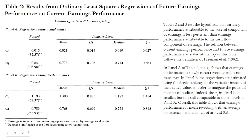Table 2 presents results from ordinary least squares regression of future earnings performance on current earnings performance. Along with Table 3, this tests the first hypothesis that earnings performance attributable to the accrual component of earnings is less persistent than that attributable to the cash flow component. Overall, this table shows that earnings performance is mean-reverting, with an average persistence parameter alpha-1 of around 0.8.